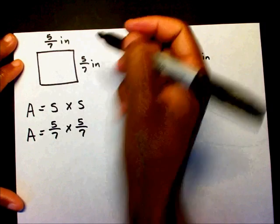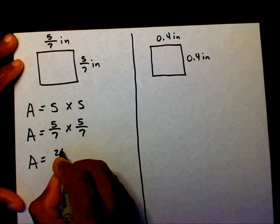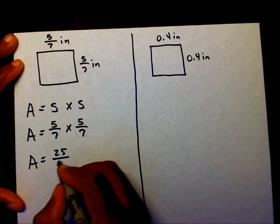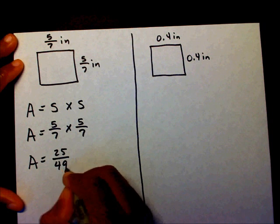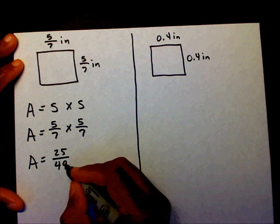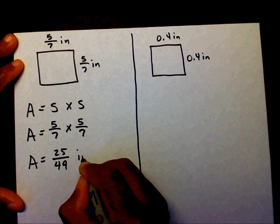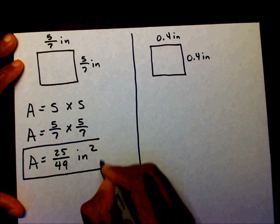So now we just need to multiply across. Five times five is twenty-five. Seven times seven is forty-nine. I can't think of a number to reduce this fraction, so it's going to be twenty-five forty-ninths inches squared. That's what you should have ended up with.